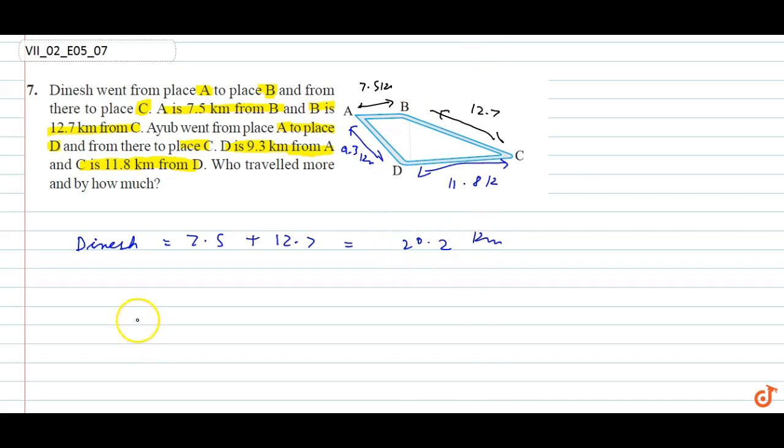Aur Ayub ne kitna chala? 9.3 plus 11.8. 21.1 km.